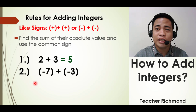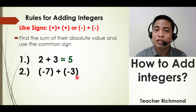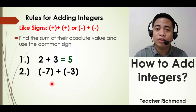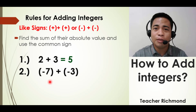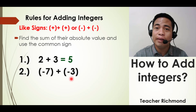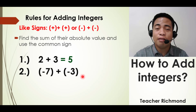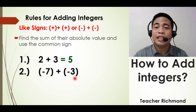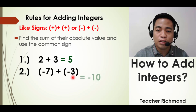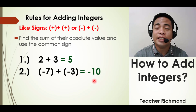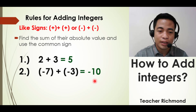The second example is negative 7 plus negative 3. Get the sum of their absolute values: the absolute value of negative 7 is positive 7 and the absolute value of negative 3 is positive 3, so positive 7 plus positive 3 equals 10. Use the common sign as the sign of your answer, so the answer is negative 10.